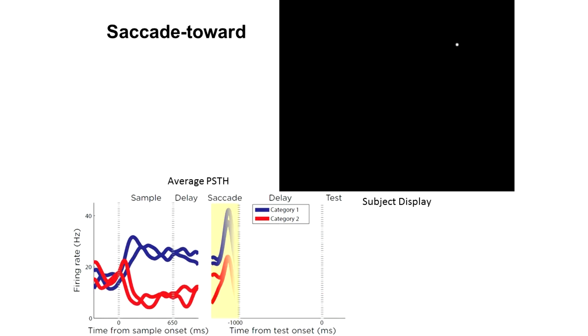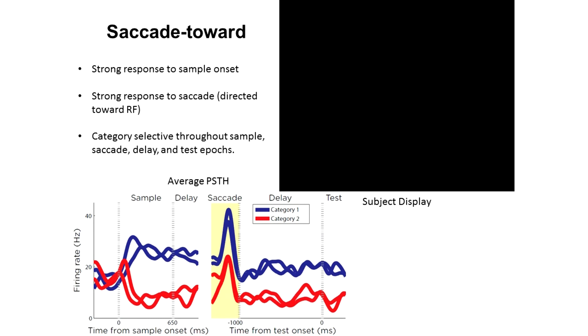During the saccade toward condition, we again see strong category encoding during the sample and early delay, as we would expect, since until the saccade cue the conditions are identical. When the saccade is cued, we see a strong response from the neuron, but note that category information is preserved both during the saccade and for the remainder of the trial.